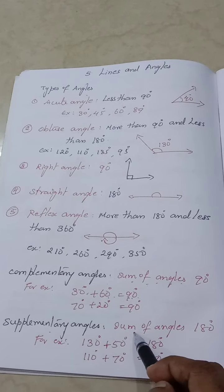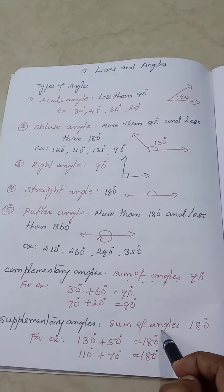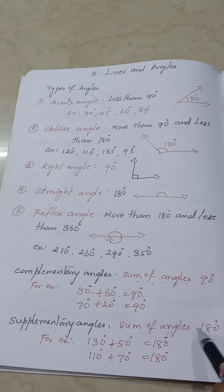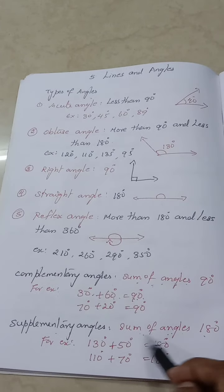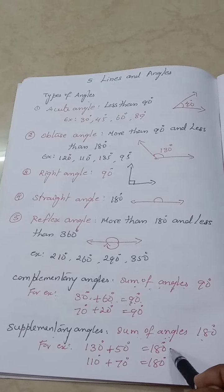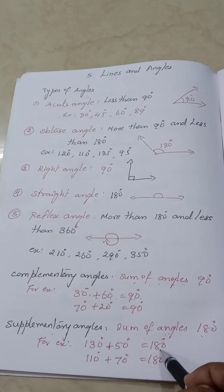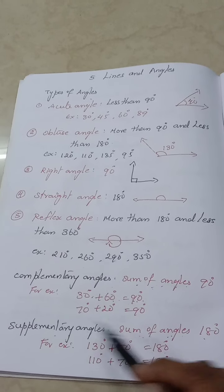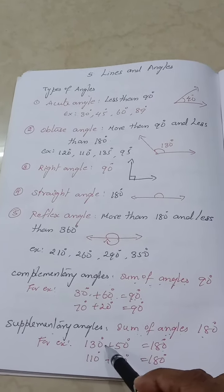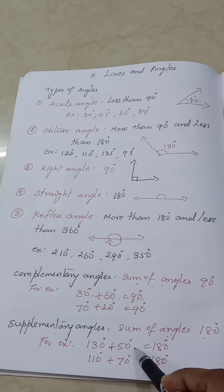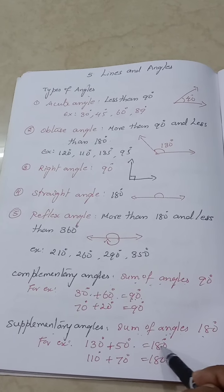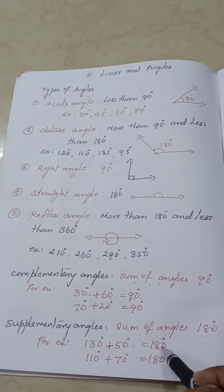Supplementary angles are two angles whose sum is 180 degrees. When you add two angles and get 180 degrees, they are supplementary. For example, 130 plus 50 equals 180 degrees.